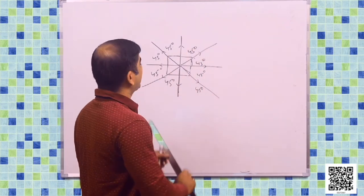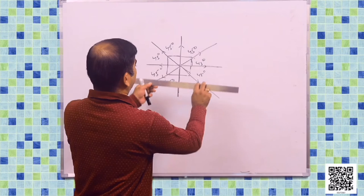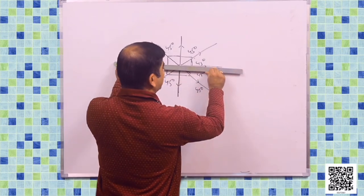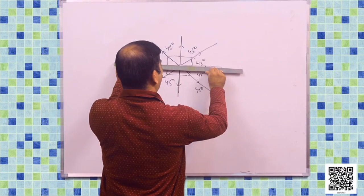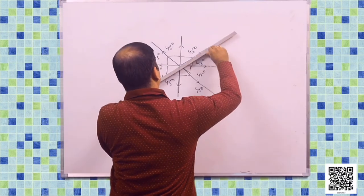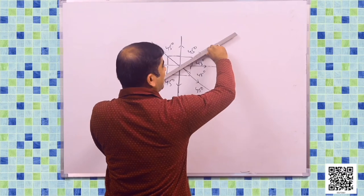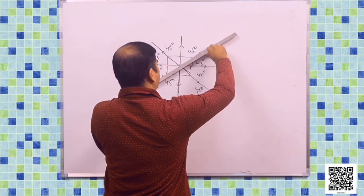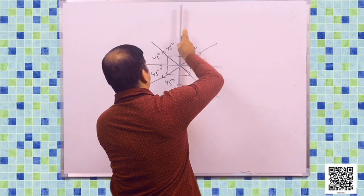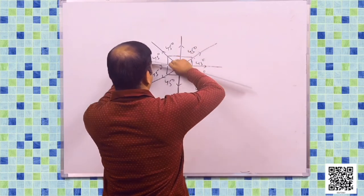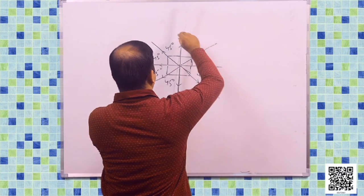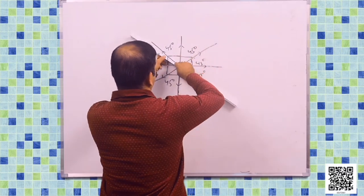Dear students, let us see it practically. Initially, this scale is at this position. When I change the position up to here, it turns 45 degrees. Again it turns 45 degrees, 45 degrees, 45 degrees, and so on to reach the initial position.